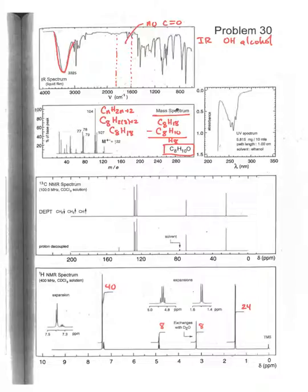A degree of unsaturation is defined as a pi bond or a ring. In terms of a chemical reaction, it's equivalent to one molecule of H2.